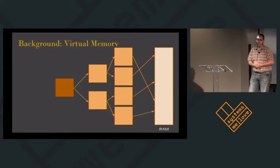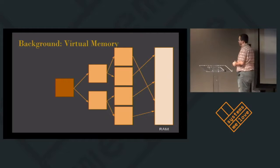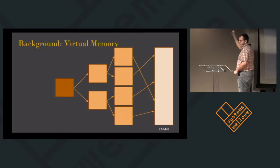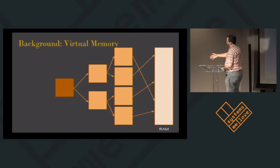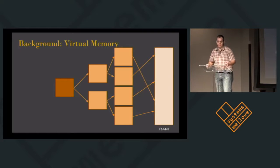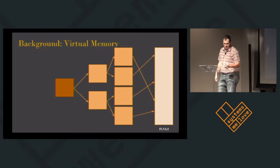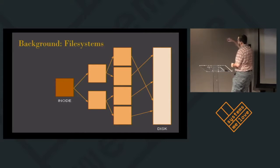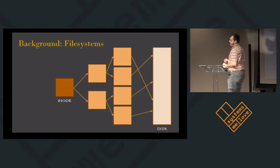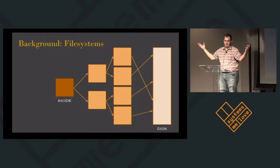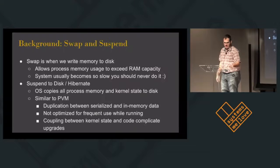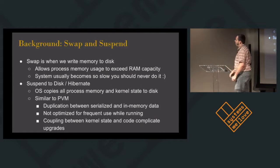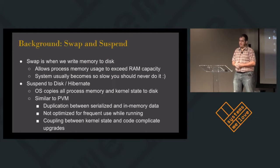Before we talk about persistent virtual memory, let's talk about what virtual memory is. An OS allocator gives us a bunch of random pages and makes them look like a nice linear address space for our process. File systems are completely different because they manage disk instead of memory, and we call it an inode instead of a page table — but basically it's the same thing. We have swap and suspend; it turns out memory ends up on disk a lot more often than we might think.